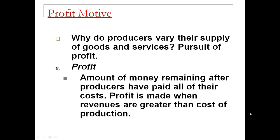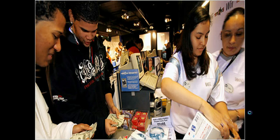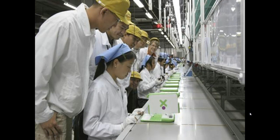Profit is made when revenues are greater than the cost of production. Some examples of costs of production include wages and salaries, rent, insurance or loans, electricity bills, raw materials, and any other good or service used to manufacture a product. So revenues minus the cost of production equals profit.